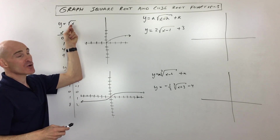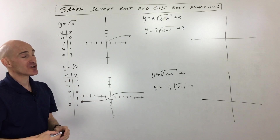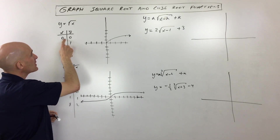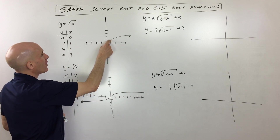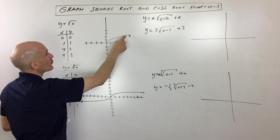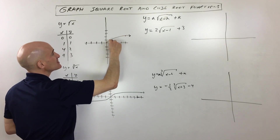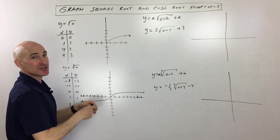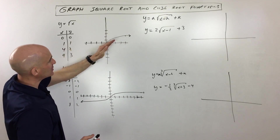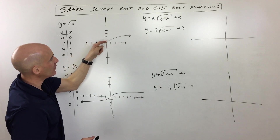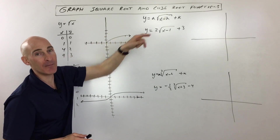And remember, we can't take the square root of a negative number — that's going to give us an imaginary number. So if I plot these points: (0,0), (1,1), (4,2), (9,3) — you can see this graph looks like a parabola on its side, just half a parabola, gradually going up.